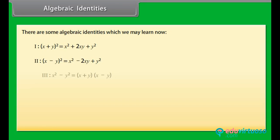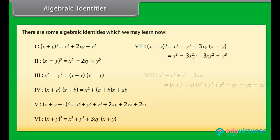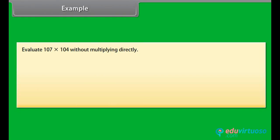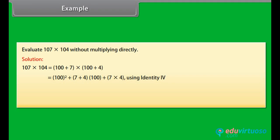Algebraic identities: There are some algebraic identities to learn. Example: Evaluate 107 × 104 without multiplying directly. 107 × 104 = (100 + 7)(100 + 4) = 100² + (7 + 4) × 100 + 7 × 4 = 10,000 + 1,100 + 28 = 11,128.